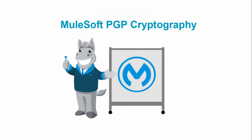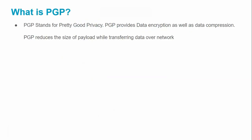In this video we are going to see how you can encrypt or decrypt data using PGP cryptography. First we need to understand what PGP is. PGP stands for Pretty Good Privacy, which compresses the data as well as encrypts it. PGP cryptography first encrypts the data, then compresses it, and then sends it over the network to reduce network latency and the size of the payload.